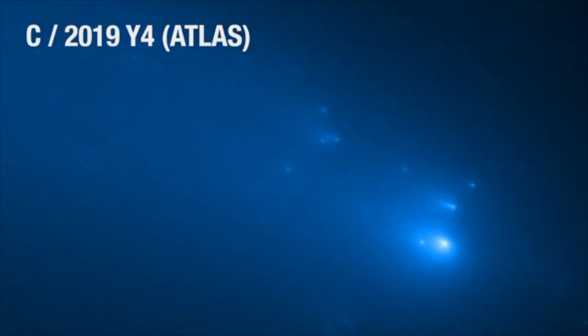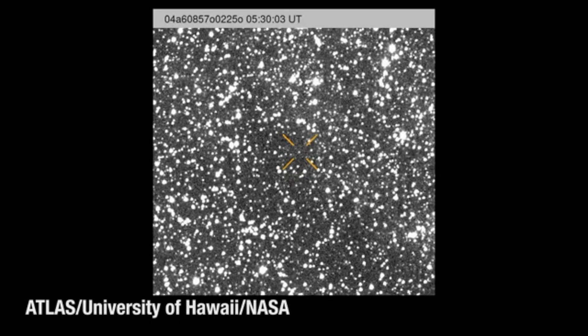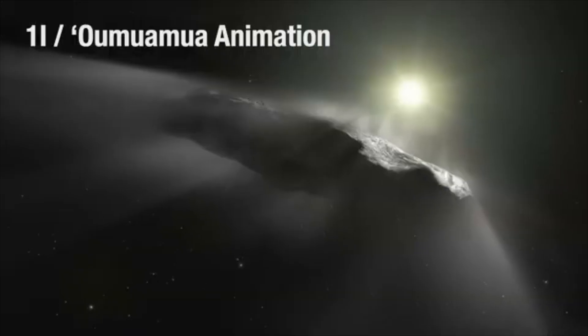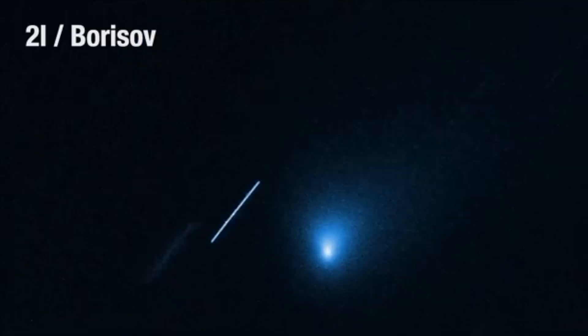Before 3I Atlas entered the picture, we detected two other interstellar visitors: 1I Oumuamua in 2017 and comet 2I Borisov in 2019.